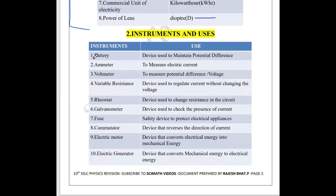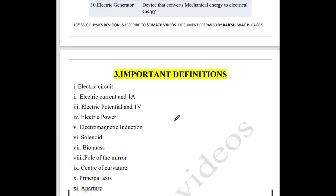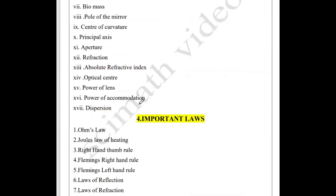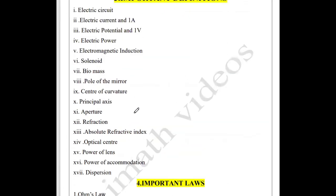Next, instruments and uses. All ten instruments that are there in the textbook — especially the rheostat, voltmeter, ammeter, and the remaining ten — are listed here, so just go through this. Next, important definitions. Here I have provided nearly 17 definitions which are very, very important.